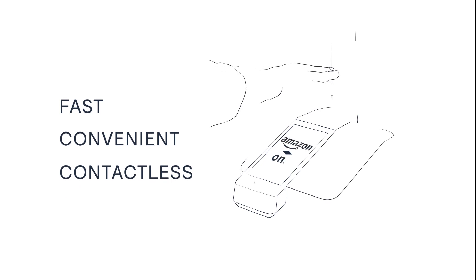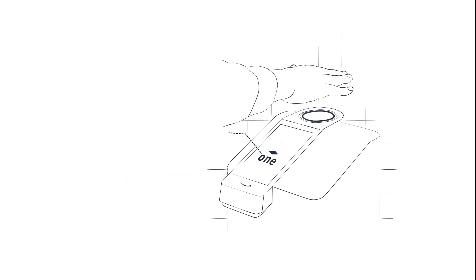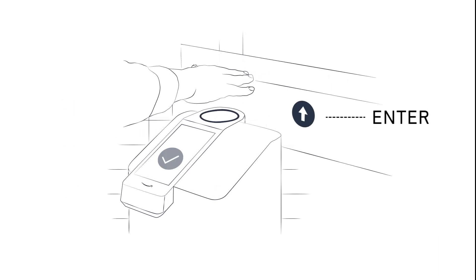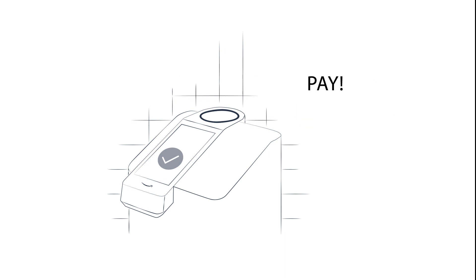Amazon One is a fast, convenient, contactless way for customers to identify, enter, and pay in any physical environment.